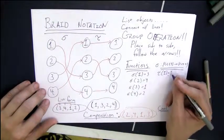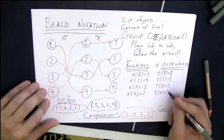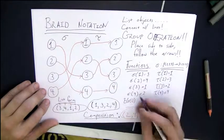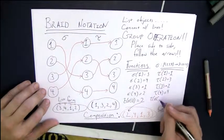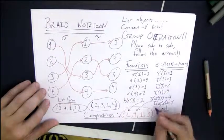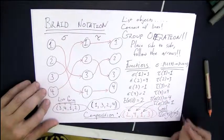And my second permutation, tau, has tau of one is one, tau of two is three, tau of three is two, tau of four is four. And then the composition of these two functions is tau of sigma. Tau of sigma of one is two, tau of sigma of two is four, then one, then three, which is exactly what putting those braids side by side did.